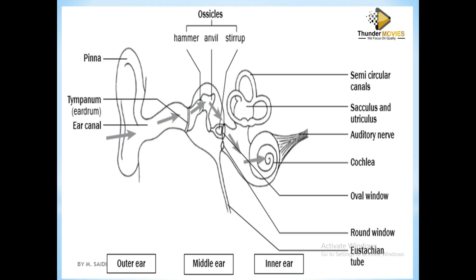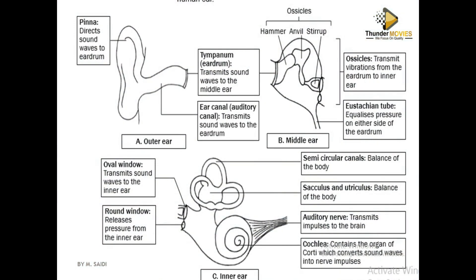The tympanic membrane is not damaged. The pinna directs the sound wave, and the auditory canal takes the information to the tympanic membrane. The eardrum transmits the sound waves onward. Each part passes information to the next. The ossicles amplify the vibration, and then the semi-circular canal sends the balance impulse to the brain via the auditory nerve.